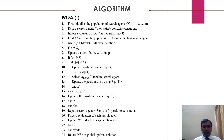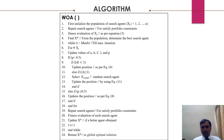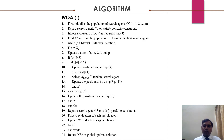The algorithm of the whale optimization approach can be written as follows: first, initialize the population; then find x* from the population to determine the best agent. Update values A, C, and l; if p is less than 0.5, update position as equation 4, then update position using equation 11; otherwise update position as per equation 8. Ultimately, return x* as the global optimal solution.